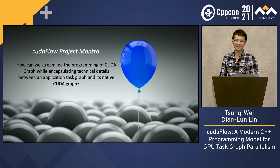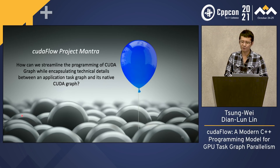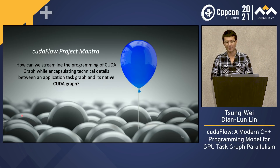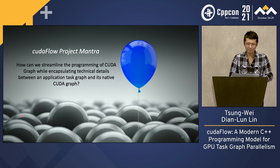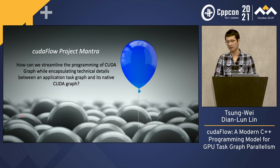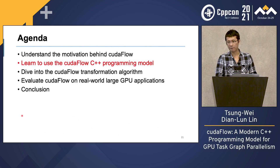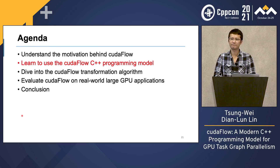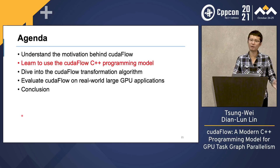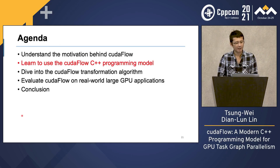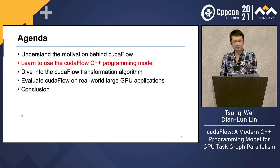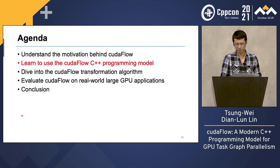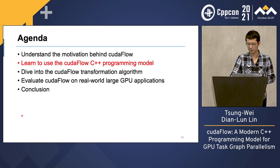So that is the big motivation. The CUDA Flow project is trying to address this question: how can we streamline the programming of CUDA Graph while encapsulating technical details between an application task graph and its native CUDA graph? Now I want to present the C++ programming model for our project CUDA Flow to simplify the programming complexity of CUDA Graph.